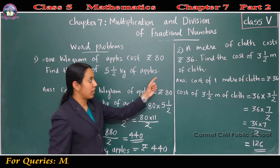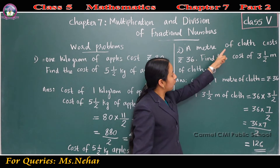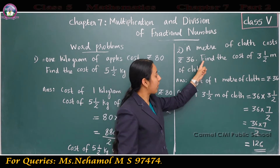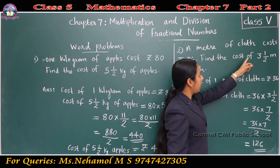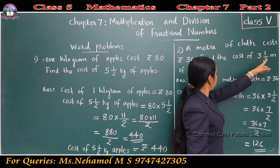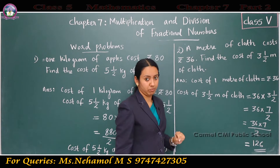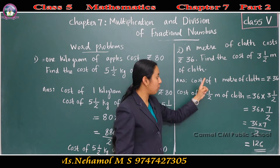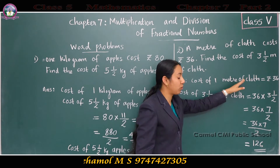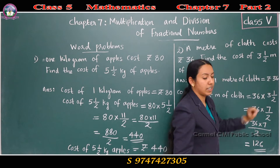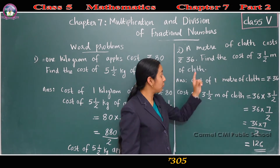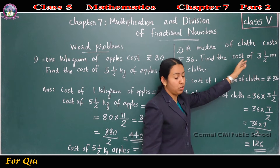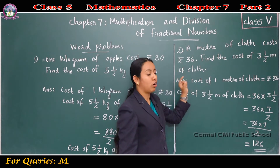Next question. A meter of cloth costs rupees 36. Find the cost of 3½ meters of cloth. The cost of 1 meter of cloth is given as rupees 36. We have to find the cost of 3½ meters of cloth.